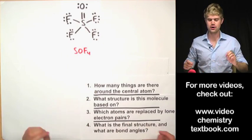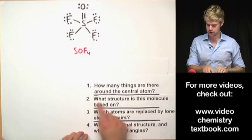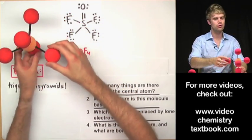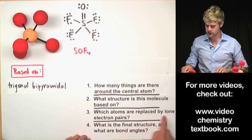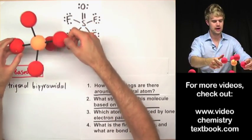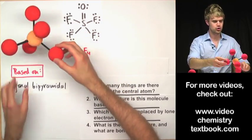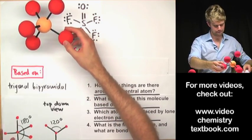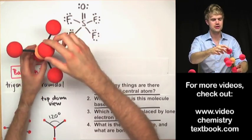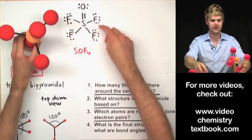SOF4. How many things are around the central atom? There are five — double bonds count the same as single bonds. The structure this molecule is based on is the trigonal bipyramidal shape, which is how you arrange five things around a central atom. Which atoms are replaced by lone electron pairs? None, because there are no lone electron pairs in this Lewis structure. So SOF4 is a regular trigonal bipyramidal molecule — 180 degrees between the two axial bonds, 90 degrees between axial and equatorial, and 120 degrees between each equatorial bond from the top down.